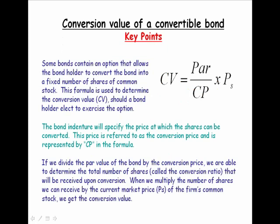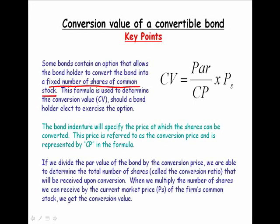The key points about conversion value: some bonds contain an option that allows the bondholder to convert the bond into a fixed number of shares of common stock — that's the conversion ratio. This formula is used to determine the conversion value should a bondholder elect to exercise that option. The bond indenture specifies the conversion price (CP in the formula). Dividing par value by the conversion price gives the conversion ratio — the total shares received upon conversion. Multiplying that by the current market price of the stock gives us the conversion value.